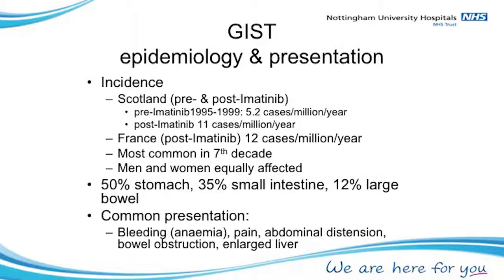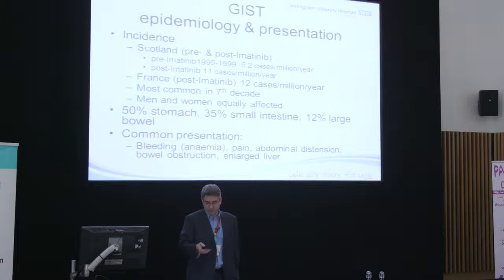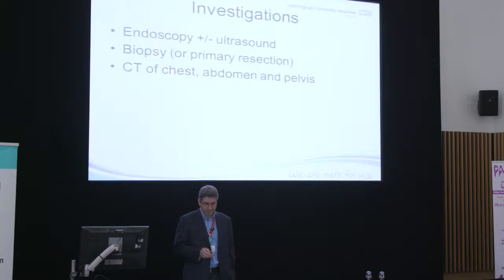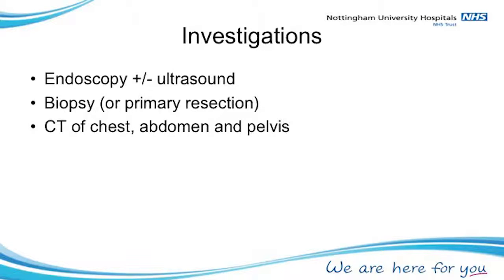Some patients are found to be anaemic, and it is only the anaemia that points to a more serious underlying problem. Patients can have pain, an extended abdomen, occasionally bowel obstruction, and occasionally an enlarged liver because that is one of the areas where GIST can spread. Investigations are usually fairly straightforward — endoscopy, a camera investigation. Quite often it is the upper endoscopy that finds the diagnosis. Occasionally you need more detailed investigations, and sometimes the only way to diagnose a GIST is to operate on the patient and take it out.